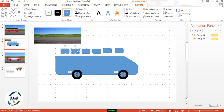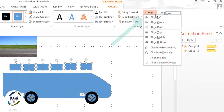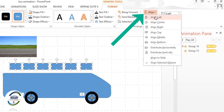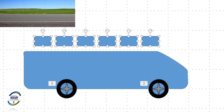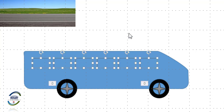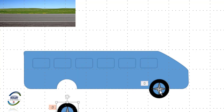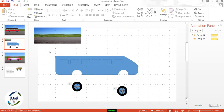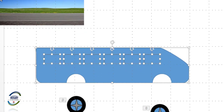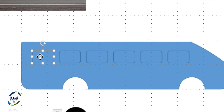Select all these objects, go to Align, choose Align Top, then go to Align and Distribute Horizontally. Move these objects into position, then move this object outside. Now select all these things, go to Merge Shapes, choose Fragment, and delete the extra objects.